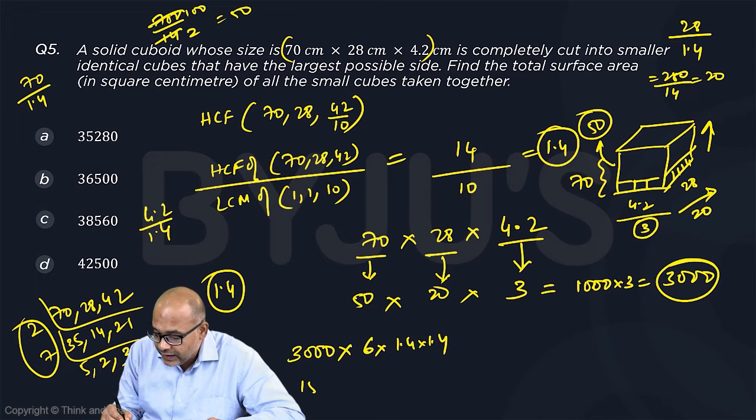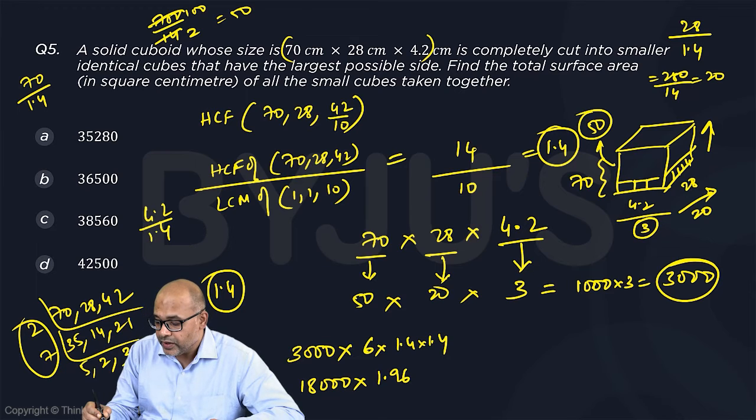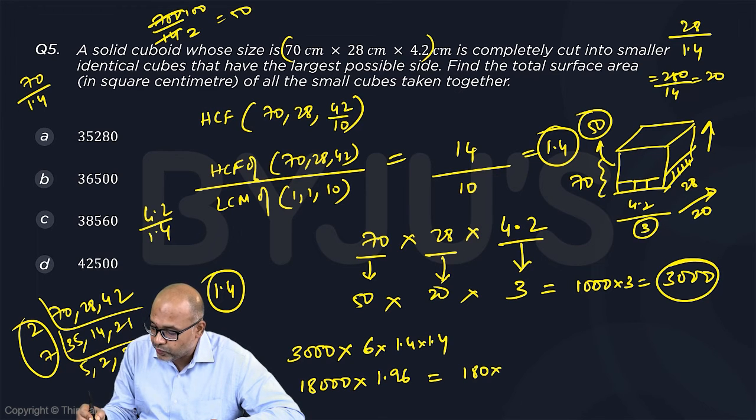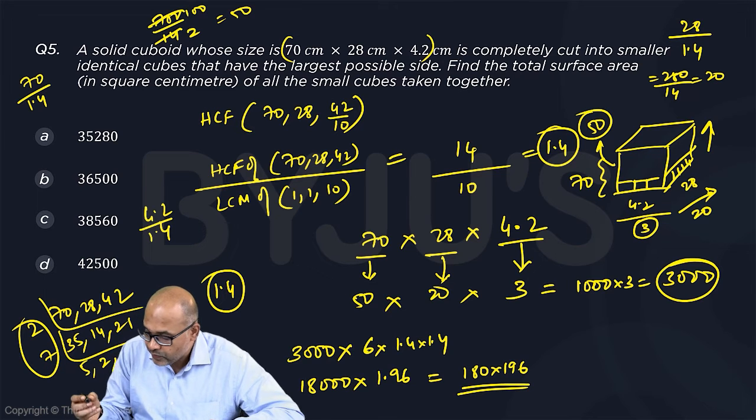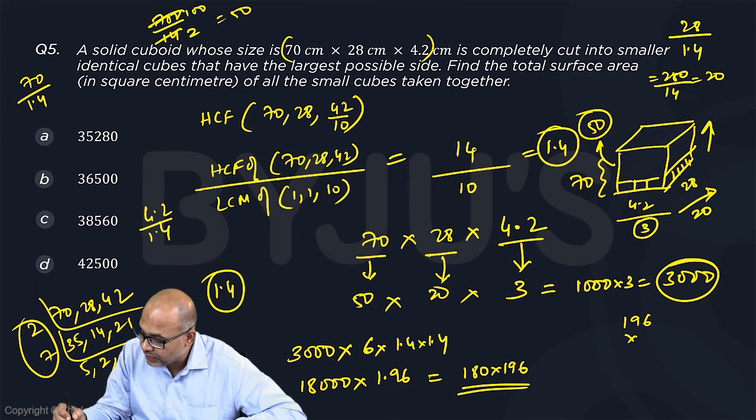So this is 18,000 into 1.4 into 1.4, 1.4 into 1.4, which is 1.96. So 196. So this will become 180 into 196. So it will end with a 0.